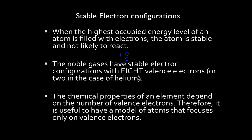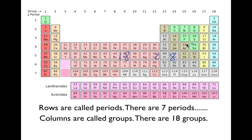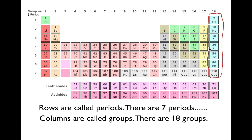The exception is helium, which has a stable outermost energy level because it's full with just two valence electrons. The rest of the noble gases have eight valence electrons and are stable. All the other groups are trying to become like the noble gases — you can think of noble gases as royalty. Everybody wants to have the same electron configuration as group 18.